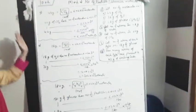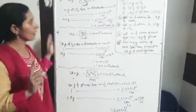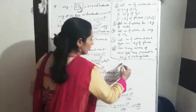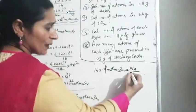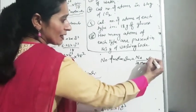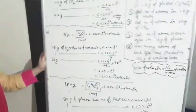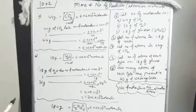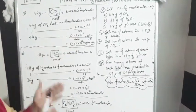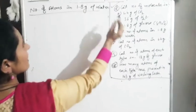इस तरीके से हमने given mass के अंदर कितने molecules हैं वो calculate कर लिए. General formula: number of molecules = Avogadro number divided by molecular mass multiplied by given mass. उधर atoms थी और इधर हमने number of molecules calculate किया. Atoms और molecules कैसे calculate करते हैं सबको समझ में आ गया होगा. अब थोड़ा complexity पर जाएंगे.